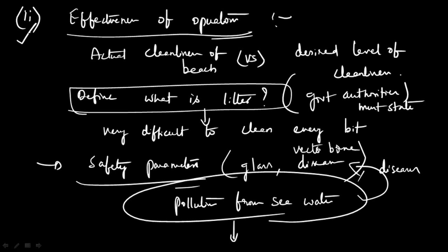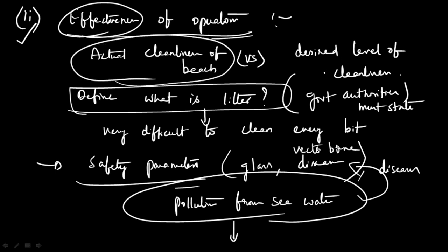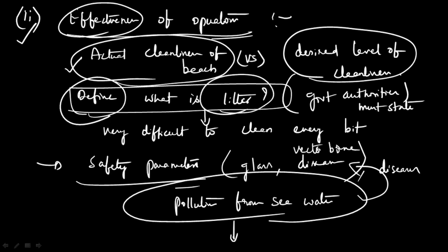The second question is to check whether operations have been effective. To check effectiveness, you compare the actual cleanliness of the beach with the desired level of cleanliness. Before making this comparison and drawing conclusions, you first have to define what is meant by litter. It is very difficult to clean each and every bit of waste, and what constitutes litter varies from person to person.